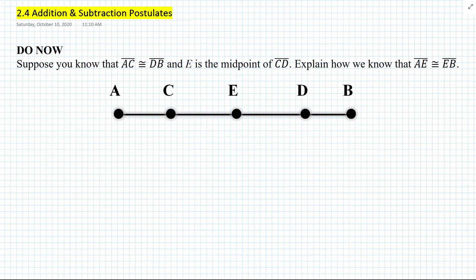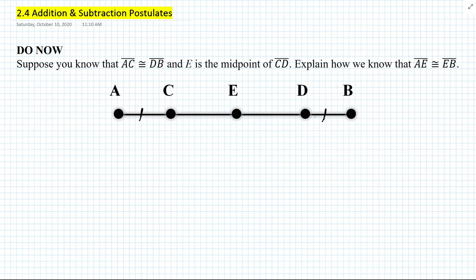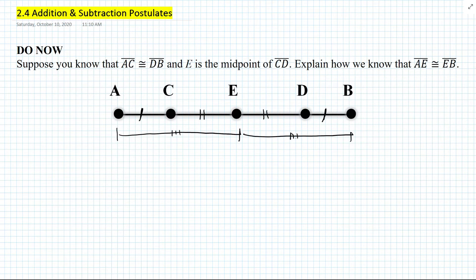So let's get started with the do now. Suppose you know that segment AC is congruent to segment DB and point E is the midpoint of segment CD. Explain how we know that segment AE is congruent to segment EB. So let's first denote what we know in the diagram. As we learned in the previous lessons, you can just place a tick mark for the congruent segment.